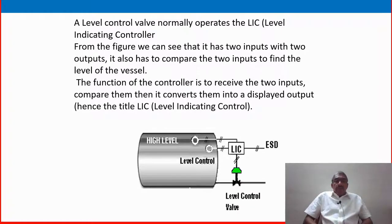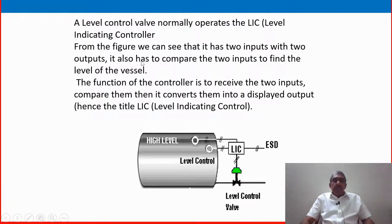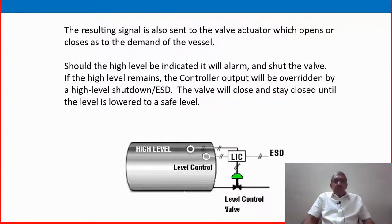Another example is a level control valve that normally operates the LIC — level indicating controller. From the figure, we can see that it has two inputs and two outputs, including an ESD output. It compares two inputs to find the level of the vessel: the normal operating set point level and the high level. The function of the controller is to receive the two inputs, compare them with the set point, and convert them into a displayed output — hence the title LIC, level indicating controller. The resulting signal is also sent to the valve actuator, which opens or closes on demand of the vessel.